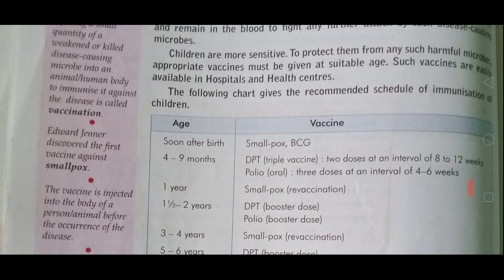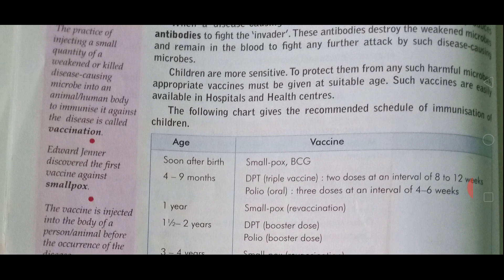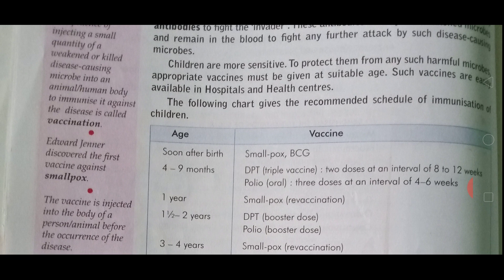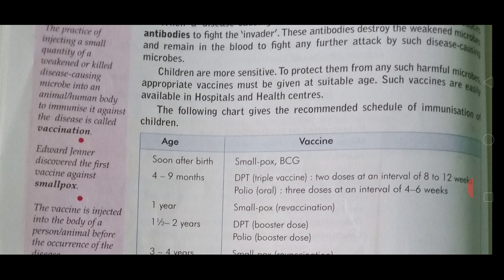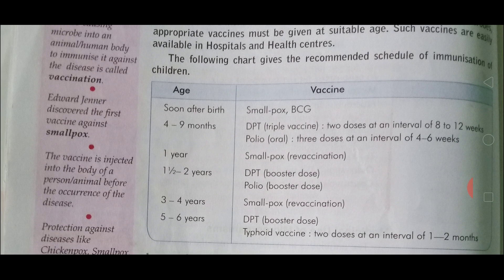Children are most sensitive, so vaccines can protect them from any type of disease. The appropriate vaccine is given at a suitable age. Such vaccines are easily available in hospitals and health centers. You will see that children have a vaccination card at the hospital, and based on suitable age, the recommended vaccines are given.